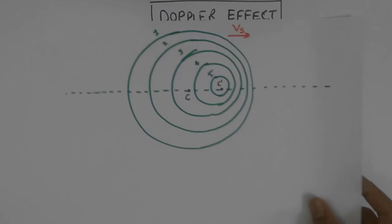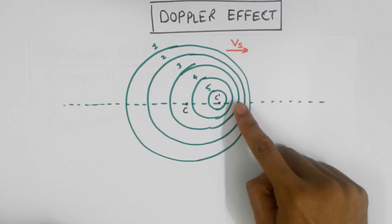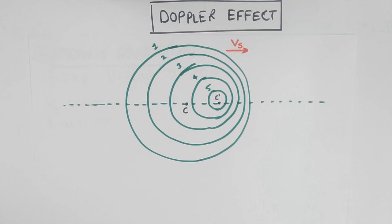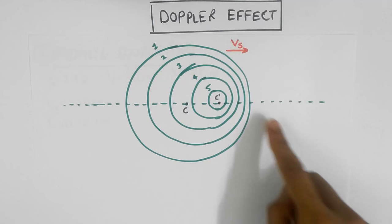Notice that in the direction of the motion, the waves are compressed and the wavelength has shrunk. But in the opposite direction over here, the wavelength has expanded. This is all due to the motion of the source. So do you think my ears would now register the same frequency of 5 hertz when I listen from here or from here? Let's find out.